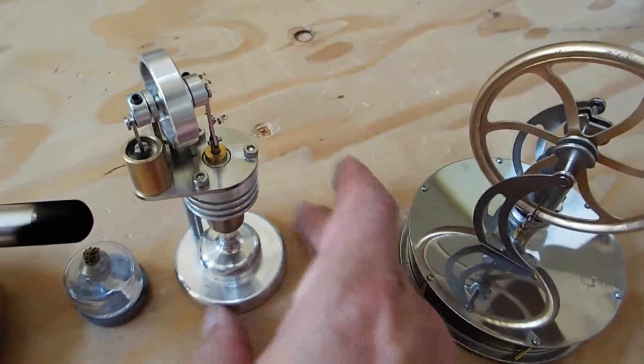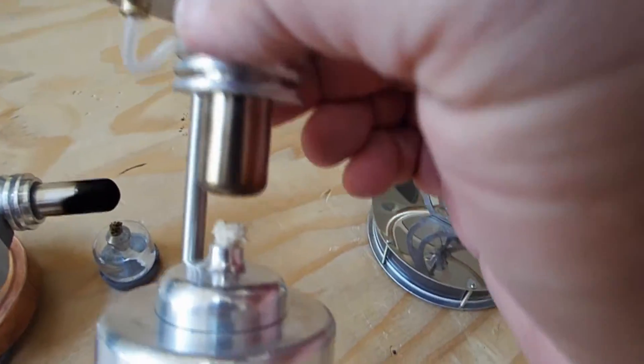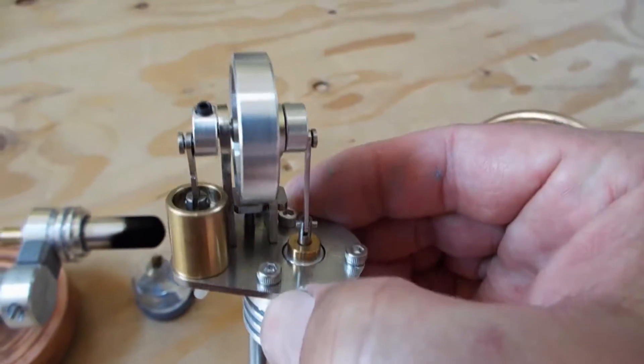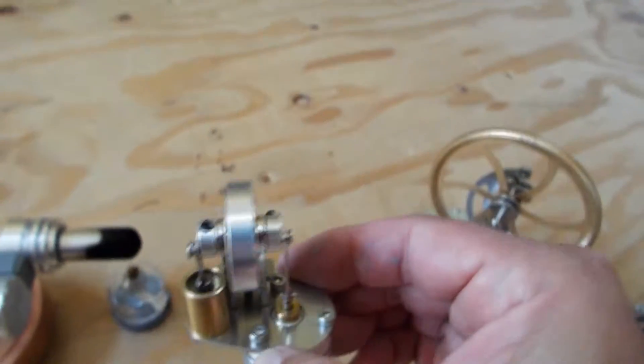The third one here is a vertical Stirling engine. It burns alcohol to run. And this one runs fairly fast. It's a pretty neat little design.